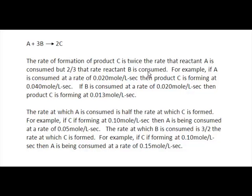For example, if A is consumed at a rate of 0.02 moles per liter per second, then C is forming at twice that rate, which is 0.04. But if B is consumed at 0.02 moles per liter per second, then C is forming at two-thirds that rate, or 0.013 moles per liter per second.